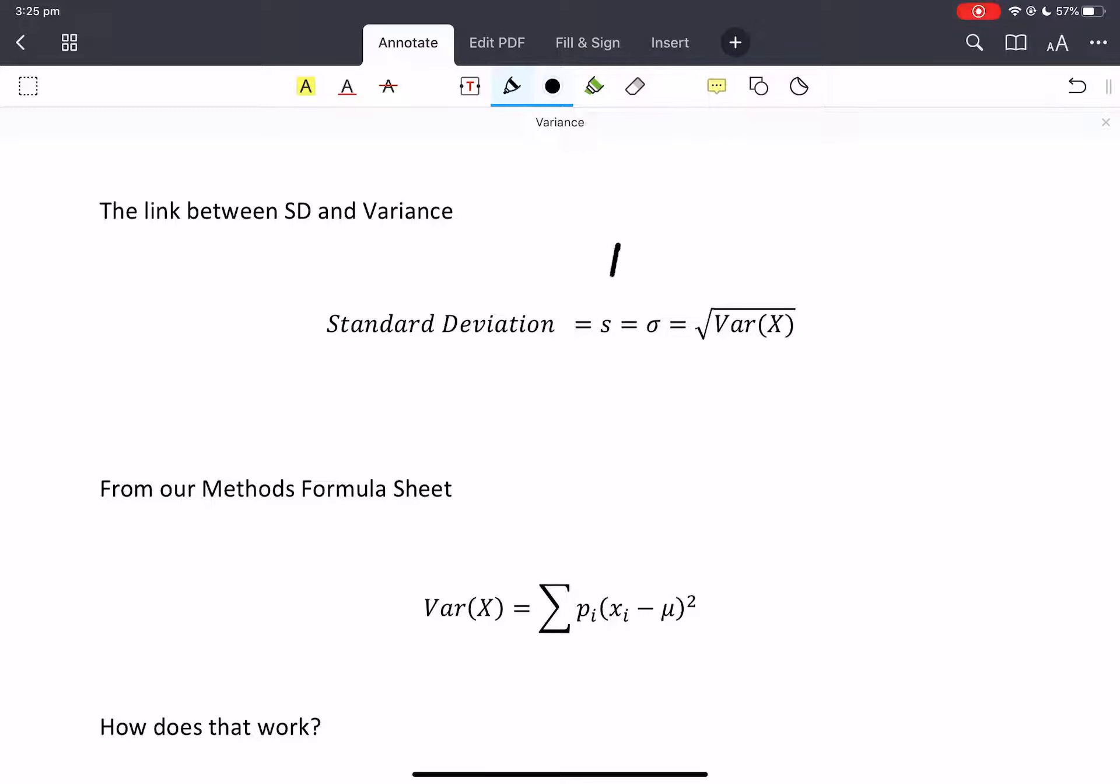Sometimes you'll see standard deviation with an S or sometimes Sigma. That's a capital Sigma and a lowercase Sigma Greek letters. Usually the Sigma is for a population standard deviation and the S is the standard deviation of a survey. Let's not get too hung up on that just yet.